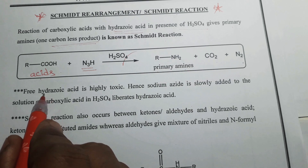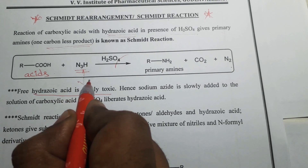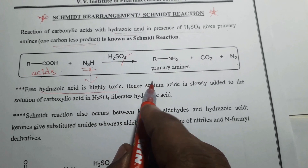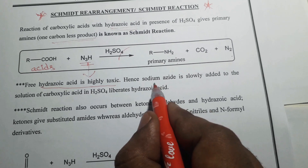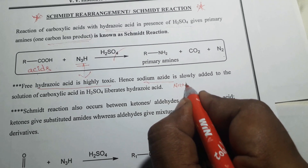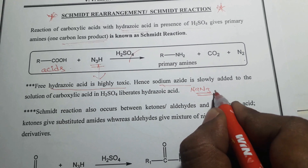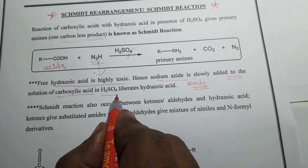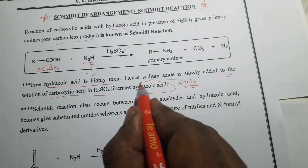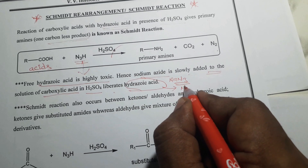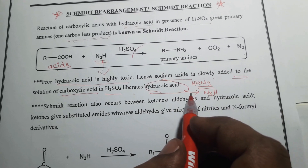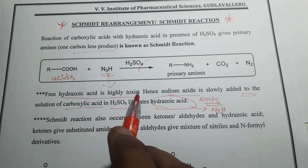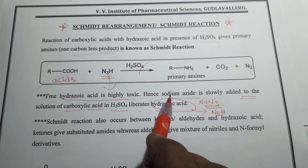An important thing related to hydrozoic acid is that it is highly toxic in nature. Hence, during the reaction process, sodium azide is used — it is slowly added to the solution of carboxylic acid in sulfuric acid, which liberates the hydrozoic acid in situ. This approach is used because of the highly toxic nature of hydrozoic acid, producing it in the reaction by using sodium azide instead.